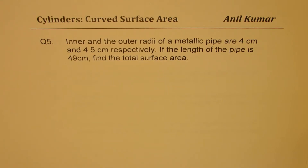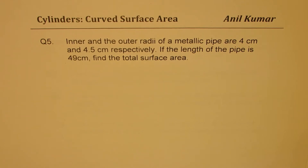Here is your ultimate question, question number five. Inner and outer radii of a metallic pipe are four centimeter and four point five centimeter respectively. If the length of the pipe is forty nine centimeter, find the total surface area.